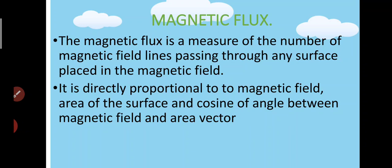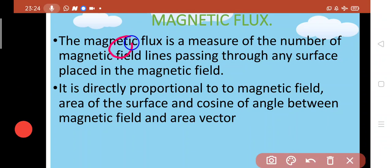Now the question is: what is its value? It is represented by the symbol Φ_B. Just as Electric Flux is represented by Φ_E, here we have Magnetic Flux which is represented by Φ_B.